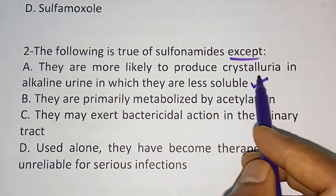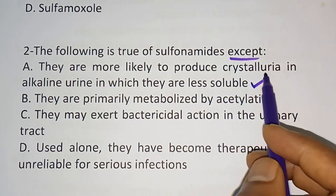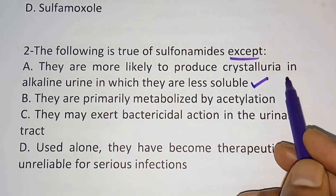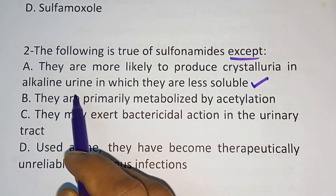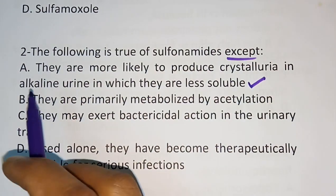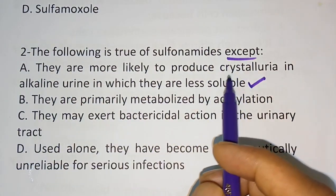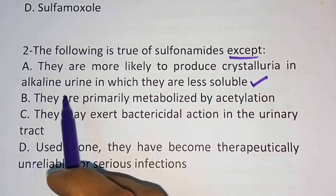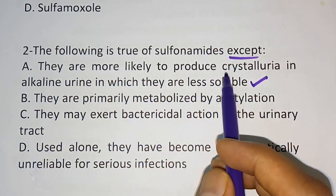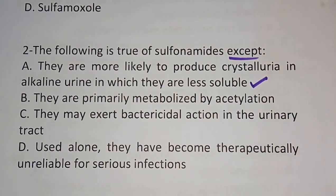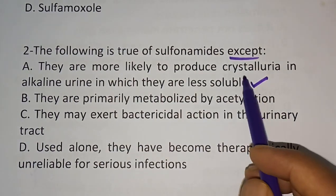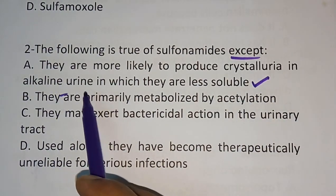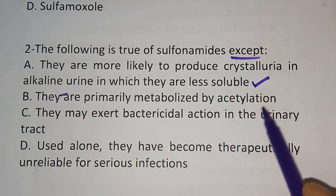Explanation: sulfonamides will cause crystalluria, but saying it occurs in alkaline urine is wrong. Alkalinization of urine will decrease crystalluria because in alkaline urine the precipitate will be more soluble, so chances of crystalluria will be less. Therefore the correct answer is option A.